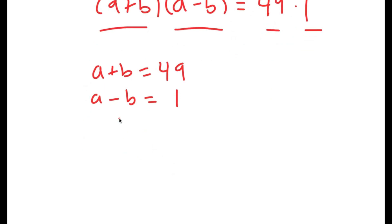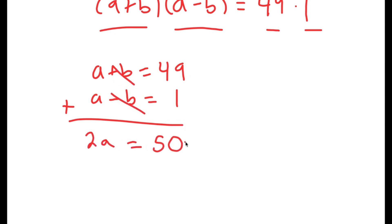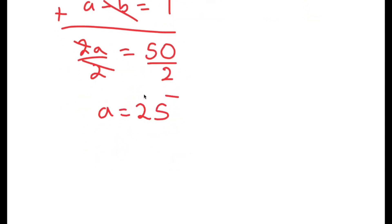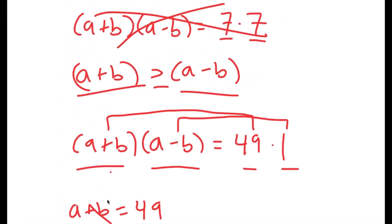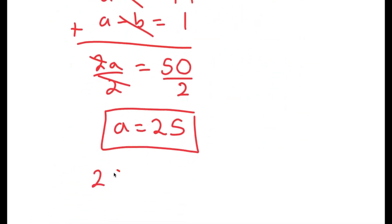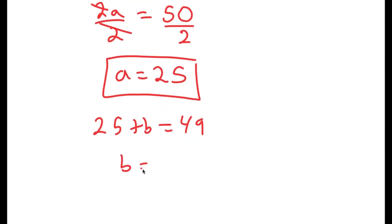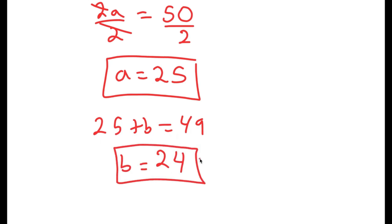What we have here is a system of equations, and I'm going to add these two equations. a plus a is 2a, b and negative b cancel out, and 49 plus 1 is 50. So I get that 2a is equal to 50, and if I divide both sides by 2, I get a is equal to 25. Now that we know that a is equal to 25, and remembering that a plus b is equal to 49, this means that 25 plus b is equal to 49, and b is equal to 49 minus 25, which is 24. So a equals 25 and b equals 24.